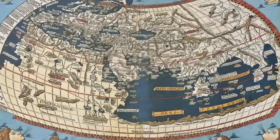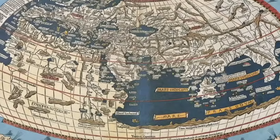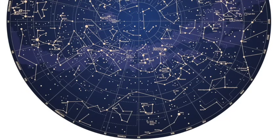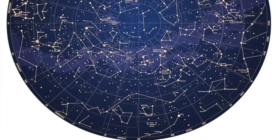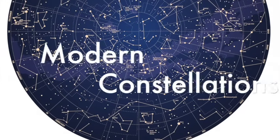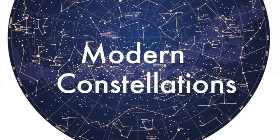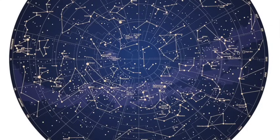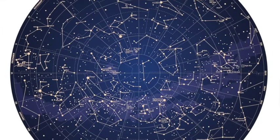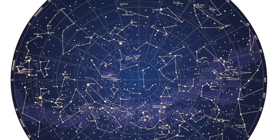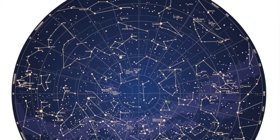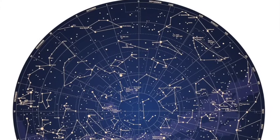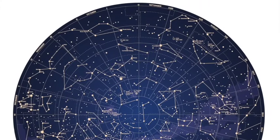Once European explorers started navigating their way through the southern hemisphere in the 16th century, stars in the southern skies began to be identified and catalogued. These southern constellations are known as the modern constellations, and they show far less imagination than their northern counterparts. These southern patterns were named after friends, patrons, and inventions of the time.